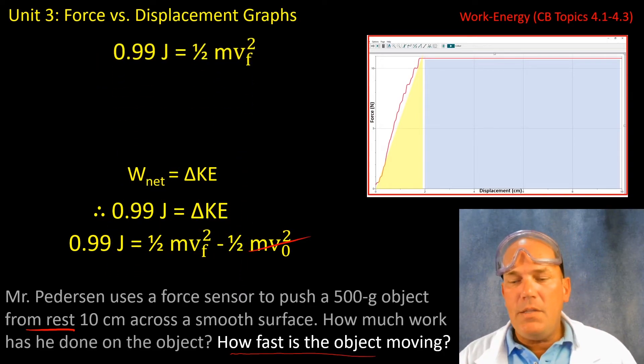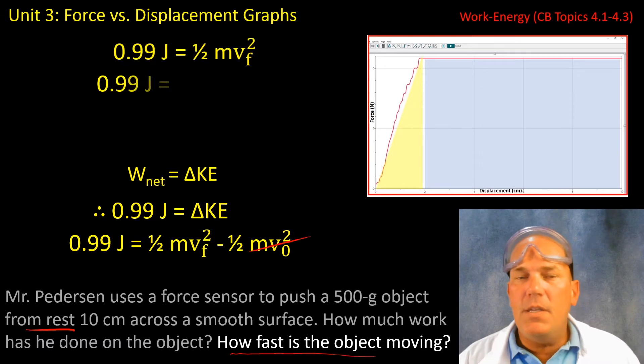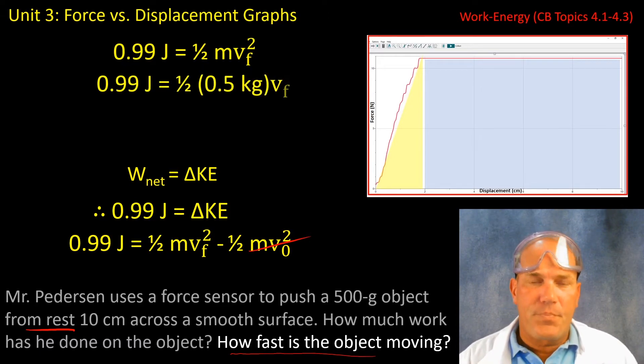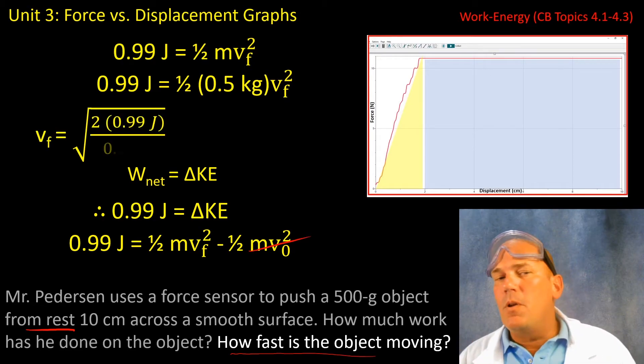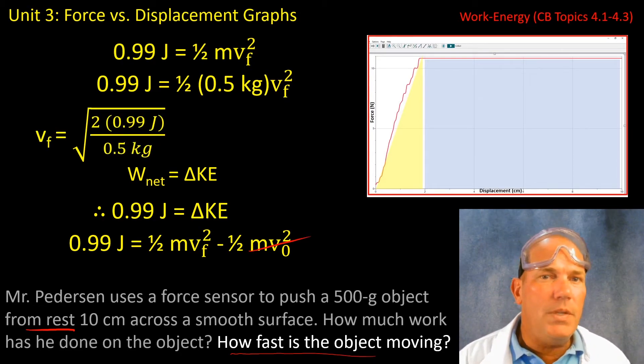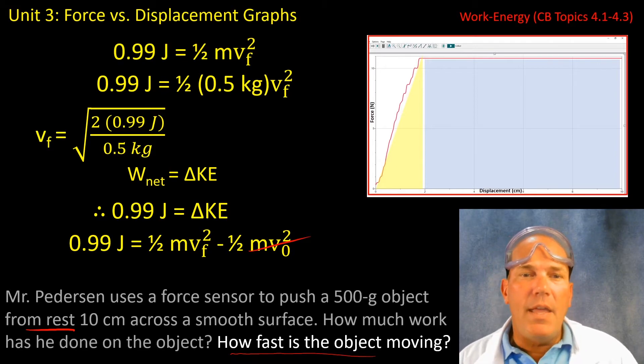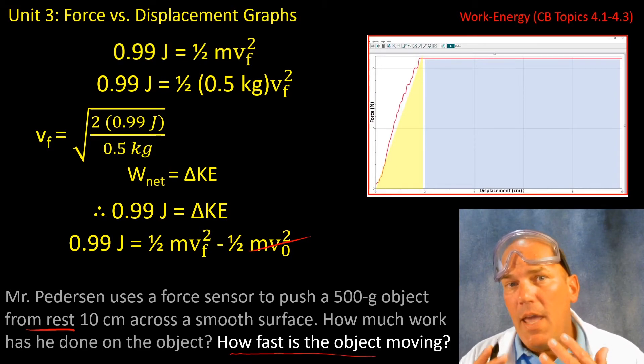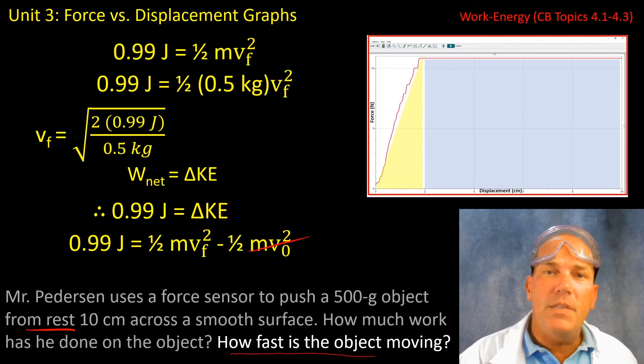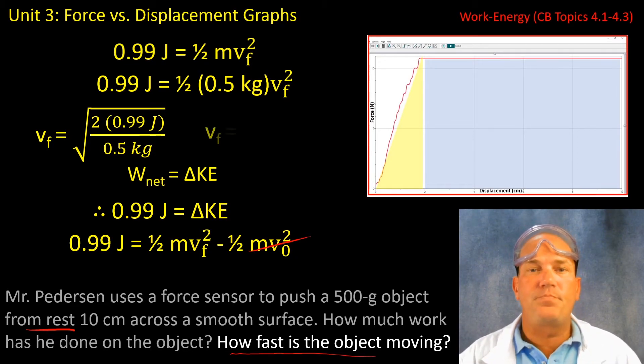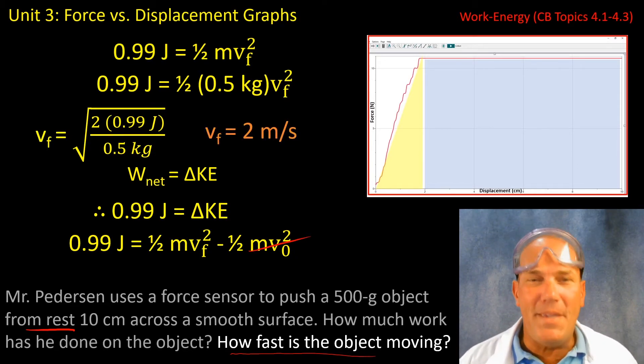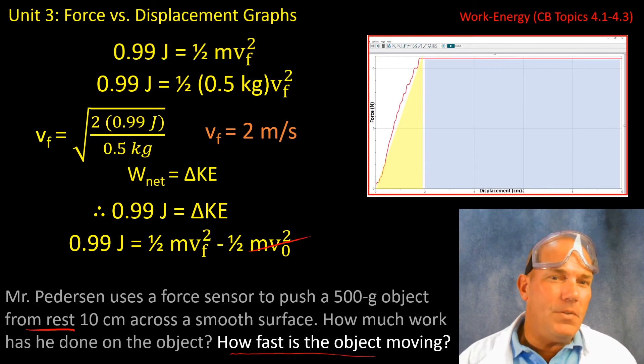Let's take this and rearrange it, do a little bit of algebra, plug in some values. And we can see that when we multiply both sides by two to get rid of the one half and divide both sides by half a kilogram to get rid of that, we're left with this expression. And of course, we're going to take the square root to find the final velocity. And we find that to be two meters per second.